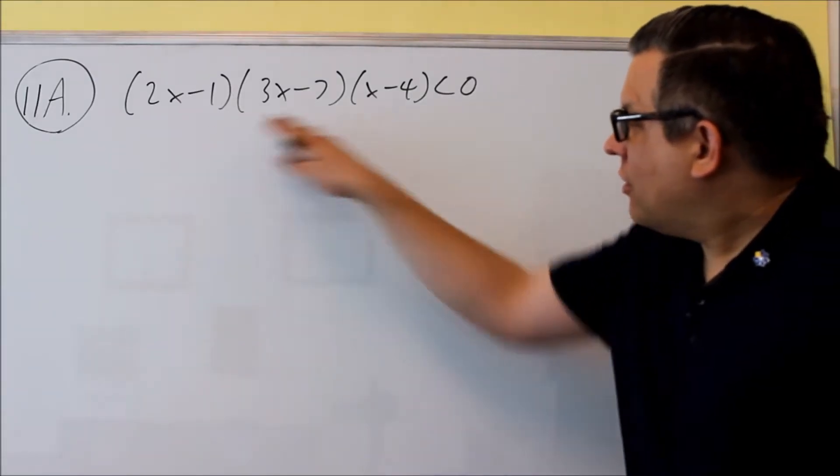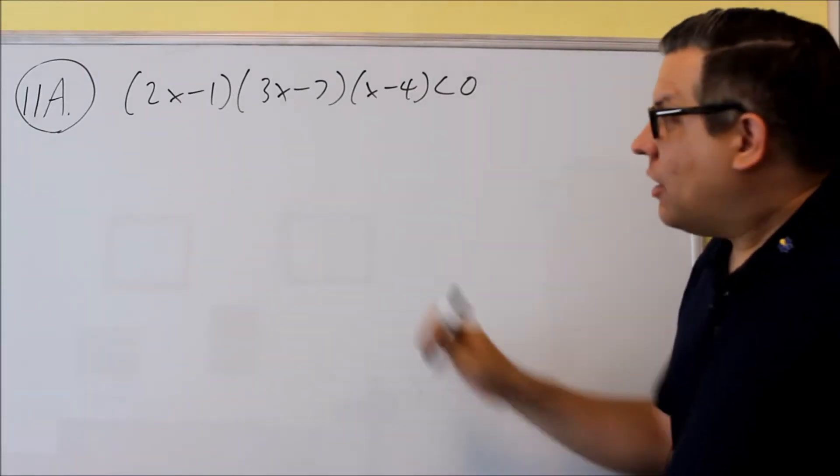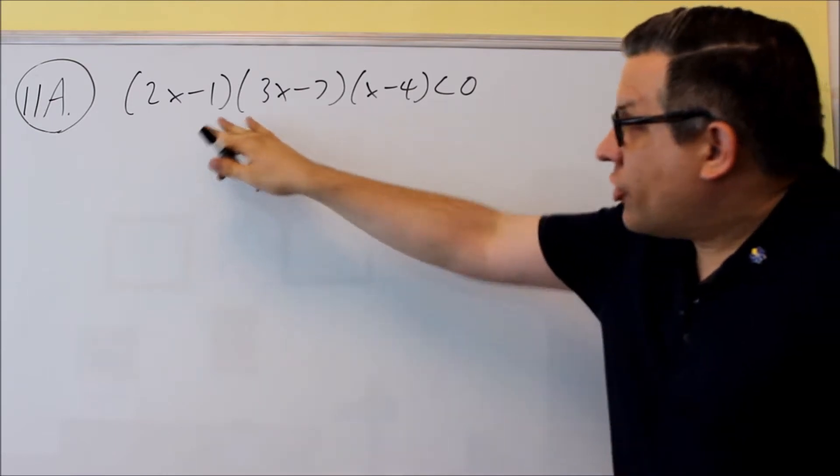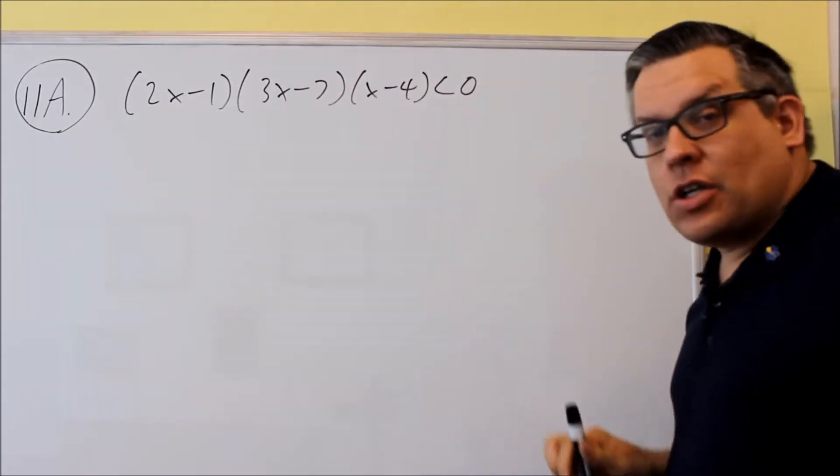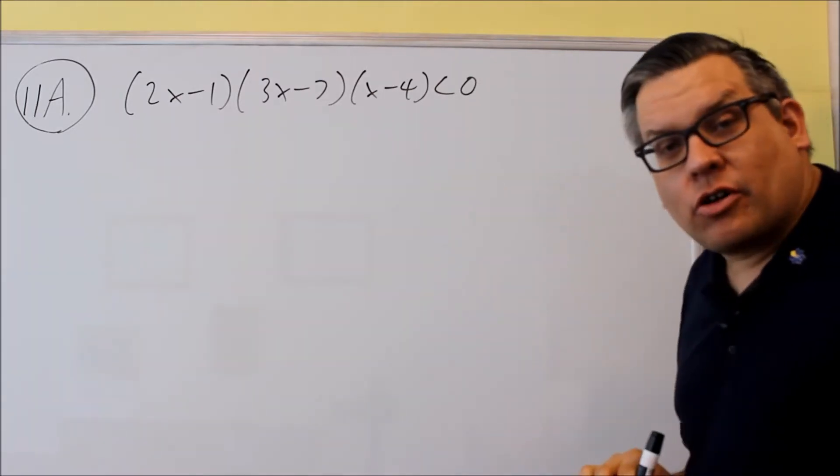Number 11, you're solving this particular inequality. So you're going to have either numbers multiplied together or divided, and it's going to be less than or greater than zero.